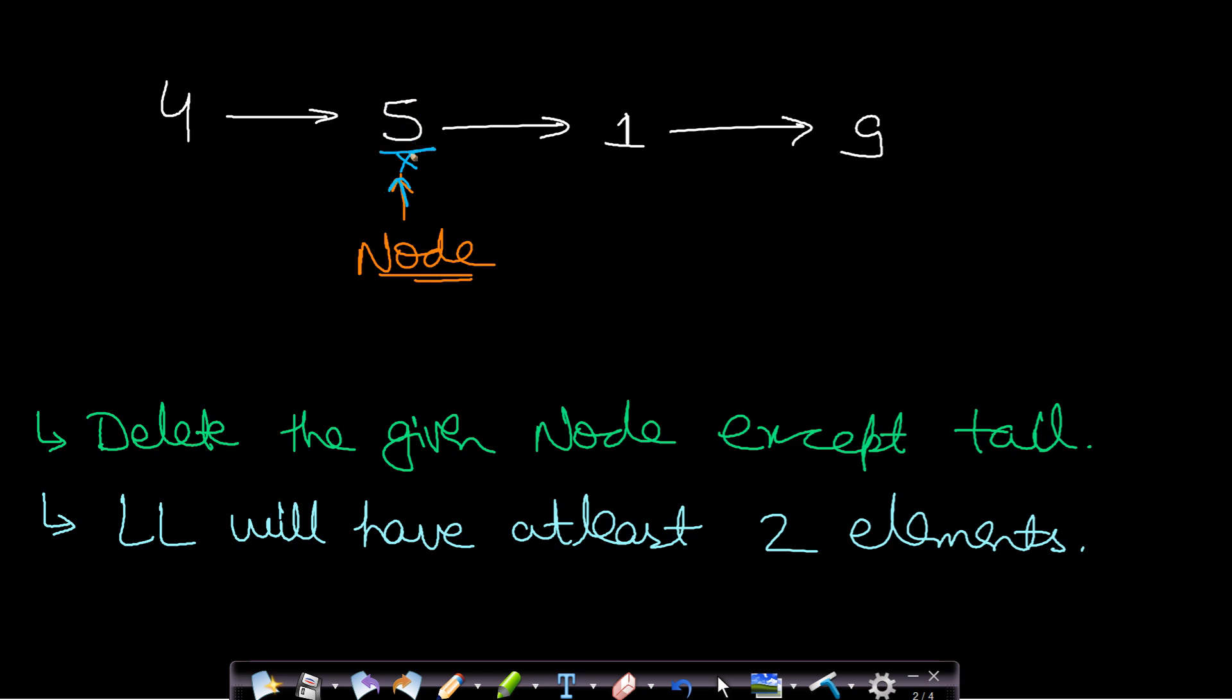But how do you delete this current node? Actually, in order to delete this current node, you will have to make this link point to 1. So there is no way to reach to this 4 because we are not given the head of the linked list.